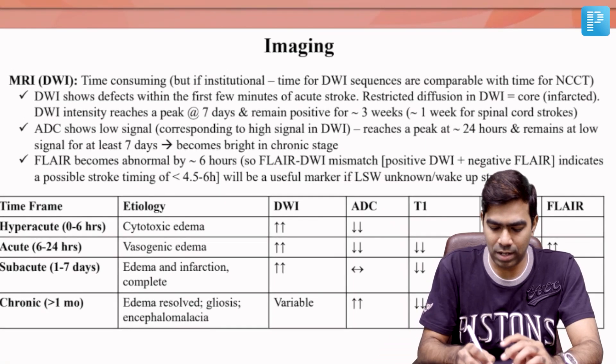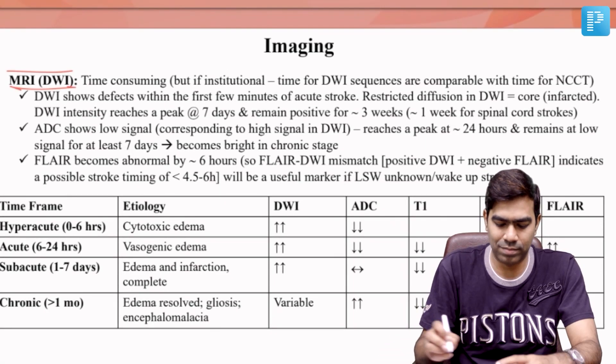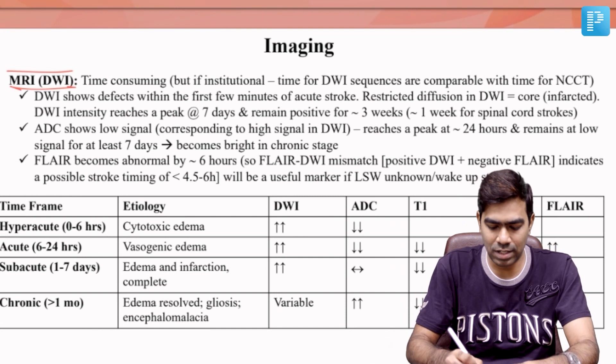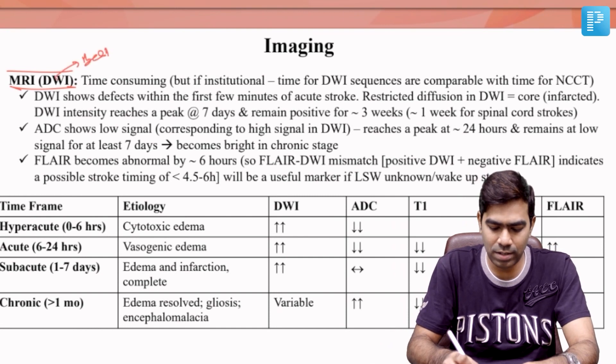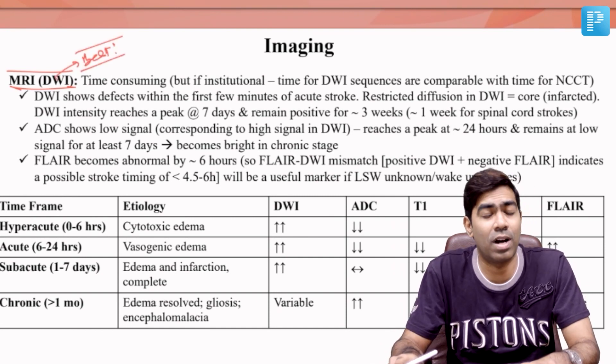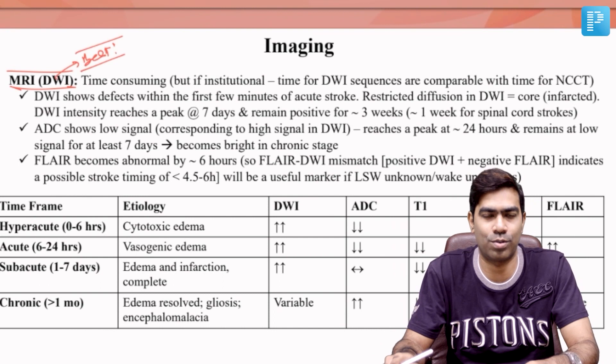Coming to MRI — remember, diffusion-weighted imaging is considered to be the best imaging modality for patients who are suffering from acute ischemic stroke.